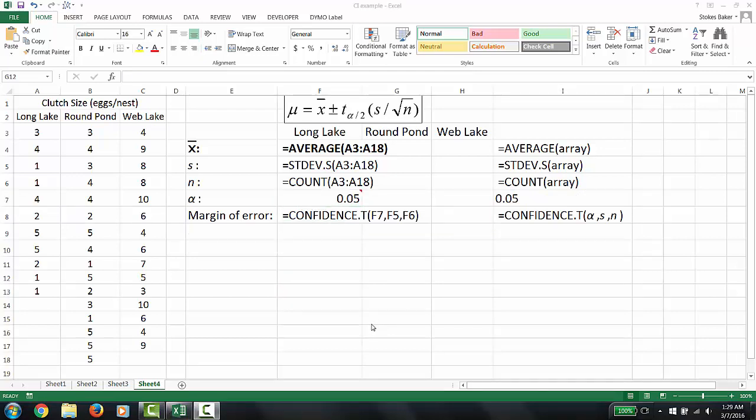To calculate the margin of error we're going to use the command CONFIDENCE.T with the following arguments. The first value is your stated level of alpha. The second cell contains the sample standard deviation. The third cell contains the information on the sample size. To show you the calculations I'm going to put in these formulas into the corresponding cells.